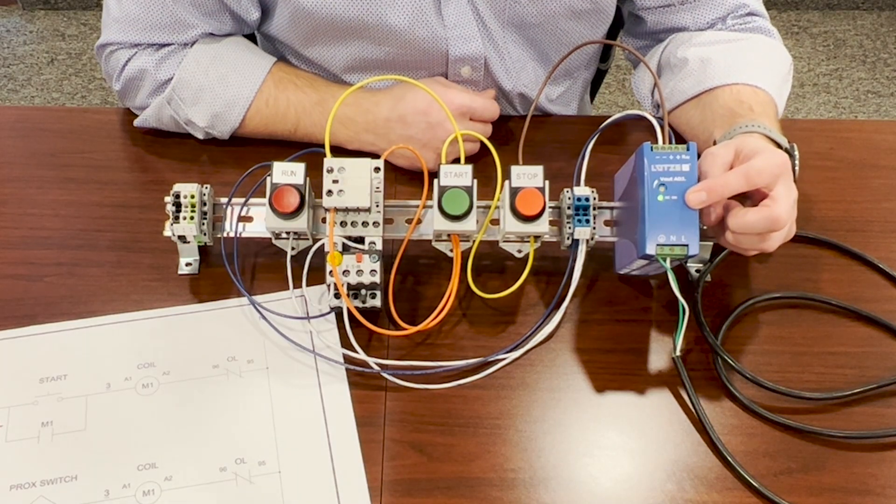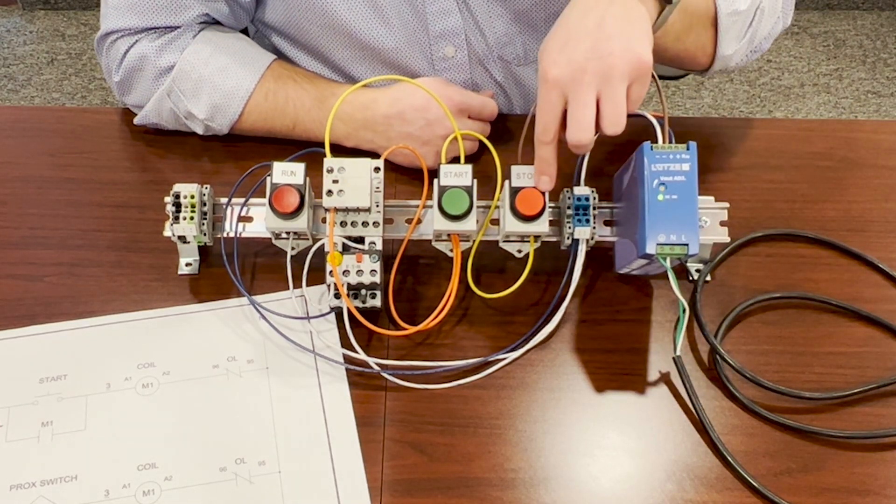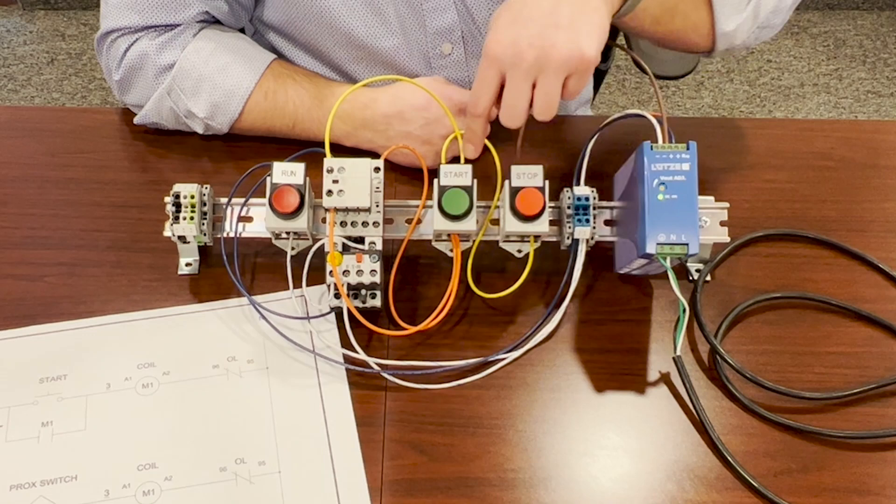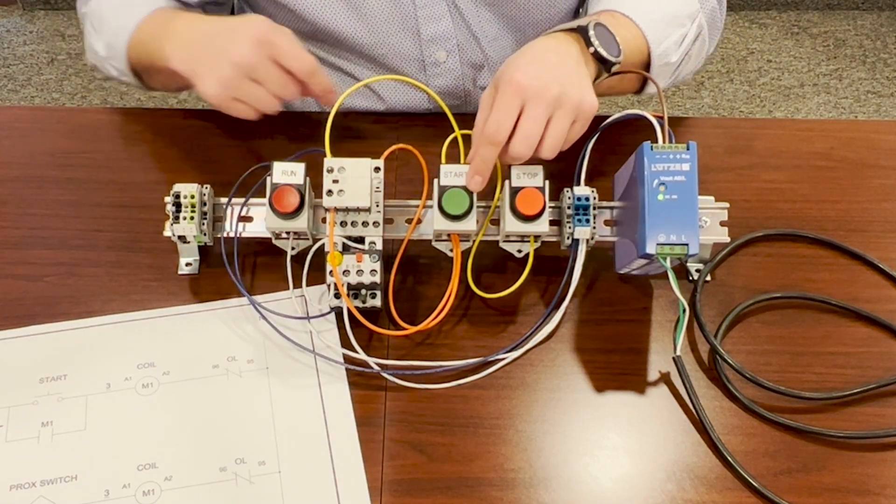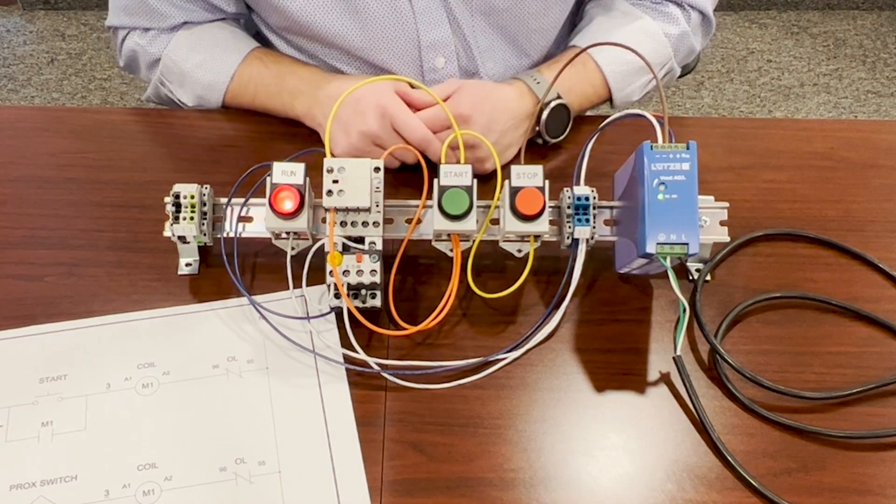24 volts is on. Power is going to our stop, normally closed, around to our start. So when we push the start, motor starter will turn on and our light will turn on. There's our light.